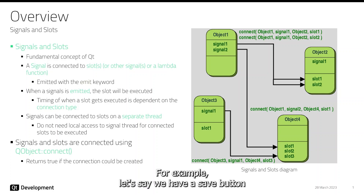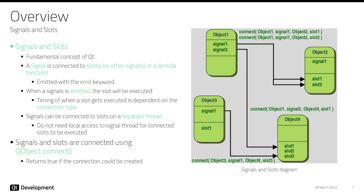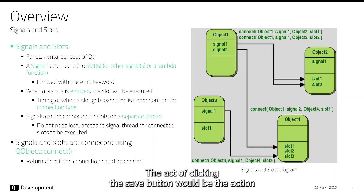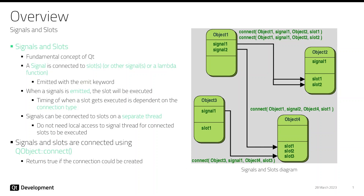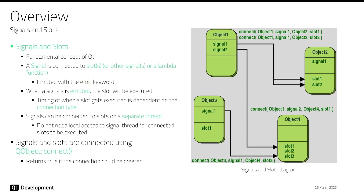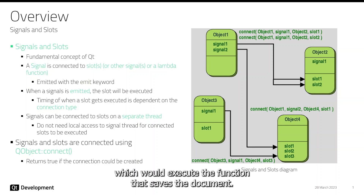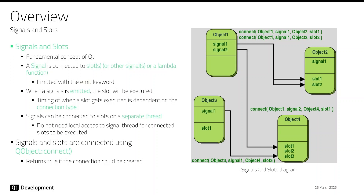For example, let us say we have a save button to save a document we are creating in a text editor. The act of clicking the save button would be the action and should therefore emit the clicked signal. The signal would then be connected to a slot which would execute the function that saves the document.